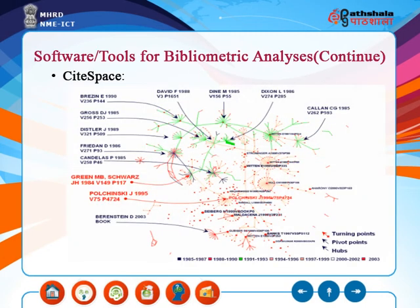CiteSpace, created by Chaomei Chen, is a tool to visualize and analyze trends in scientific literature. It is a free Java application that can be downloaded by users. The input data sources for CiteSpace are Web of Knowledge, PubMed, ArXiv, ADS, and NSF Award Abstracts. A unique feature of CiteSpace is that records from Derwent World Patents Index can also be visualized.